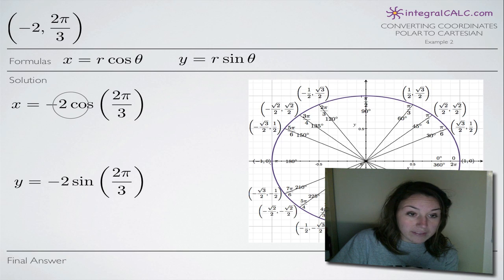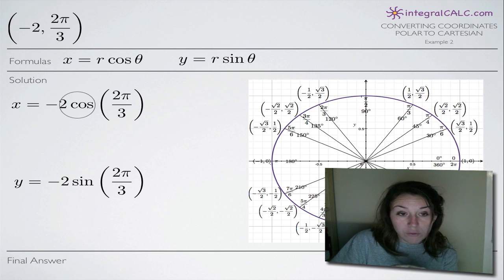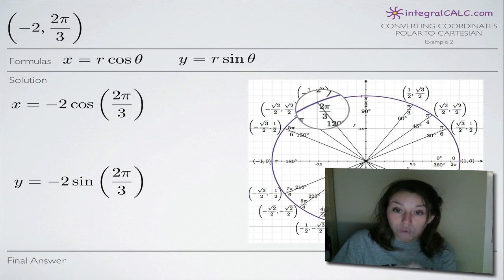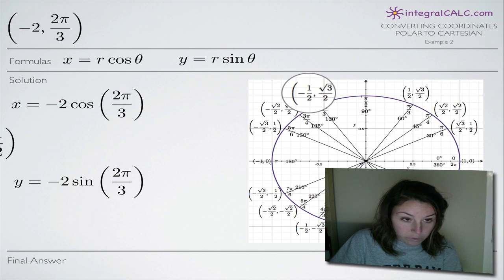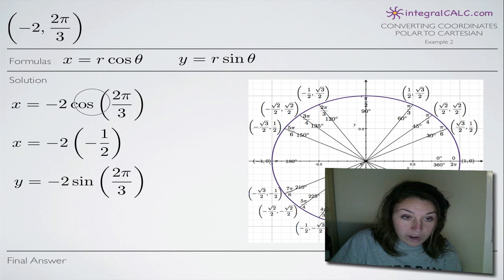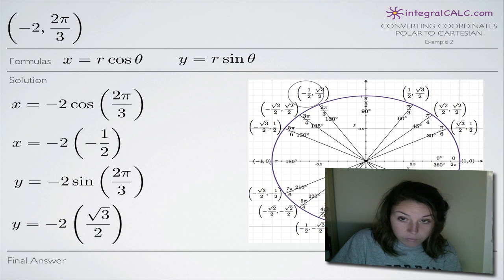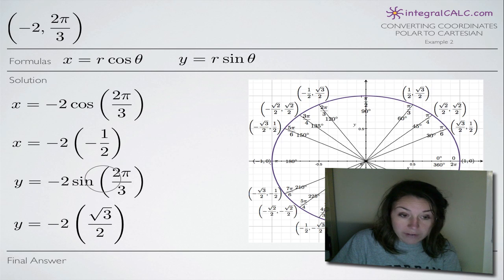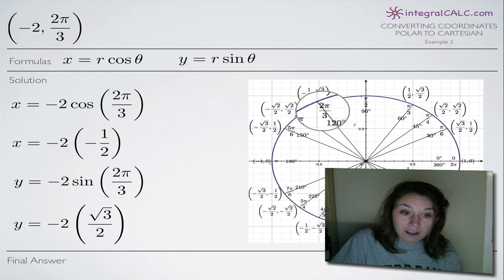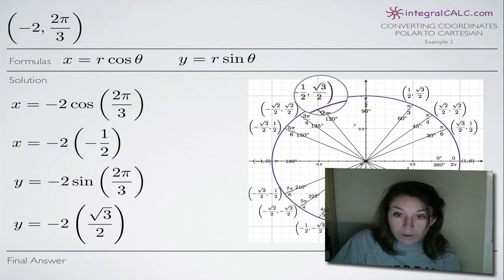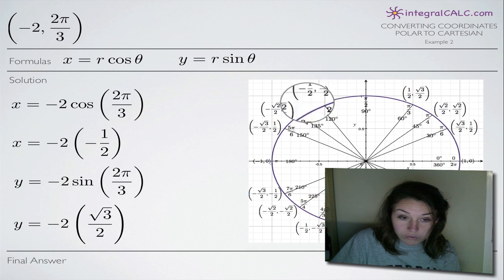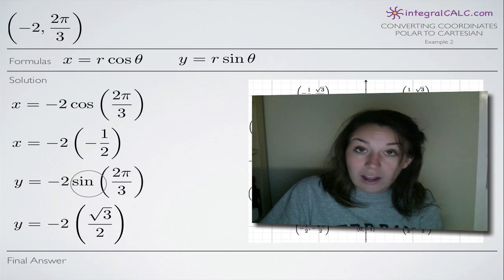When we have x equals negative 2 cosine of 2pi over 3, we look for the angle 2pi over 3, and because it's cosine, we look at the x coordinate, which is negative 1/2. So we get negative 2 times negative 1/2. For y equals negative 2 sine of 2pi over 3, we look at the y coordinate, which is the square root of 3 over 2, replacing sine of 2pi over 3.